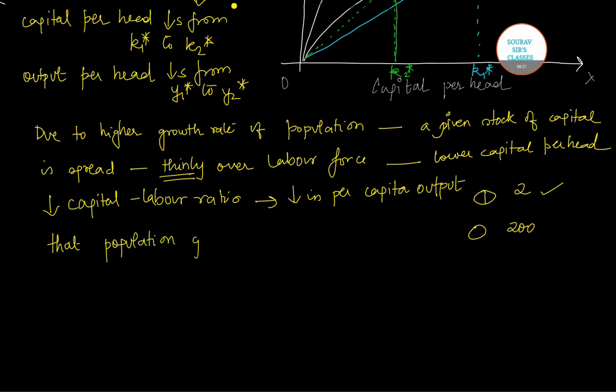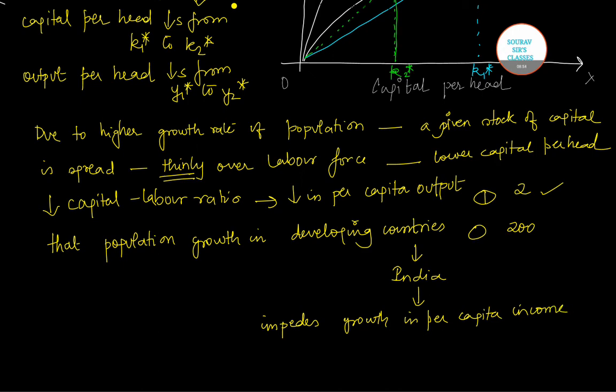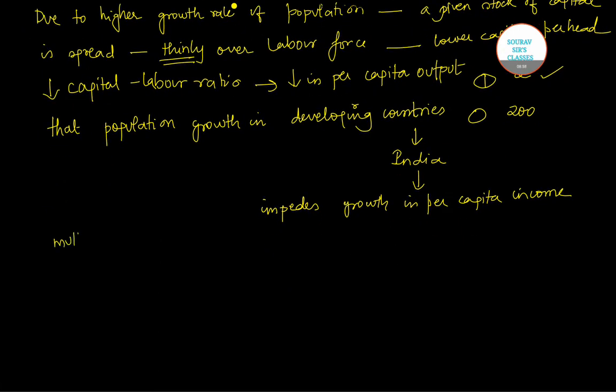Now this is an important result of neoclassical growth theory which shows that population growth in countries like India impedes growth, and because of this, therefore it actually multiplies our efforts to raise the living standard of the people.